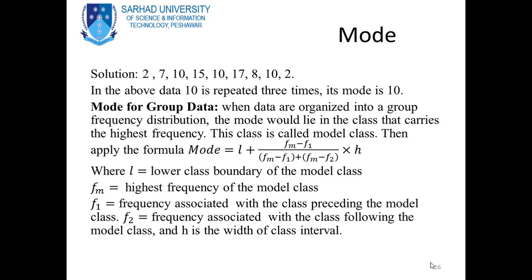Mode for grouped data: when data are organized into a grouped frequency distribution, the mode lies in the class with the highest frequency — called the modal class. Apply the formula: Mode = L + [(Fm − F1) / ((Fm − F1) + (Fm − F2))] × H, where L is the lower class boundary of the modal class, Fm is the maximum frequency, F1 is the frequency preceding the modal class, F2 is the frequency following it, and H is the class width.